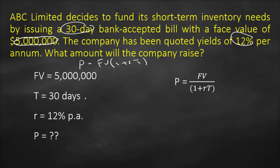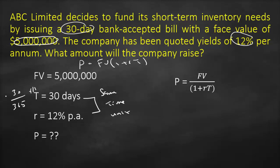Please make sure that any time we deal with a time value of money question, time and interest must have the same time unit. If the interest rate is per year, we need to convert time to years as well. Therefore, to convert 30 days to years, we divide 30 days by 365 days per year, giving us our time in years.